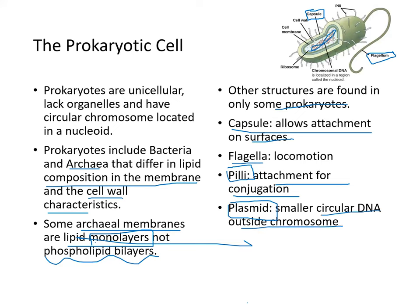Prokaryotes include bacteria and archaea that differ in lipid composition in their cell membrane and cell wall characteristics. Some archaeal membranes are lipid monolayers, not phospholipid bilayers. Pili allow attachment for conjugation, transferring plasmids — small circular DNA found outside the chromosomes.